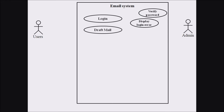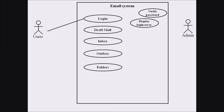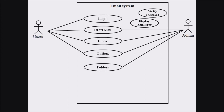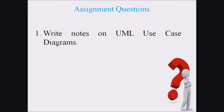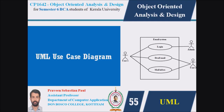In this lecture, we have discussed the use case diagram. A use case represents the relationship between the actor, system, and different processes. In the email system, we showed different users like user and admin, and different processes like login, draft mail, inbox, outbox, and folders represented within ellipses. The system is represented within a rectangle and the actors are represented by the actor symbol. Hope you have understood this topic. The assignment question is: write notes on UML use case diagrams. In the upcoming lecture, we will discuss another example relating to UML use case diagrams.